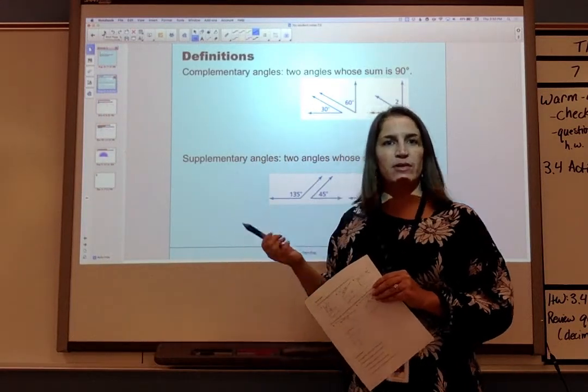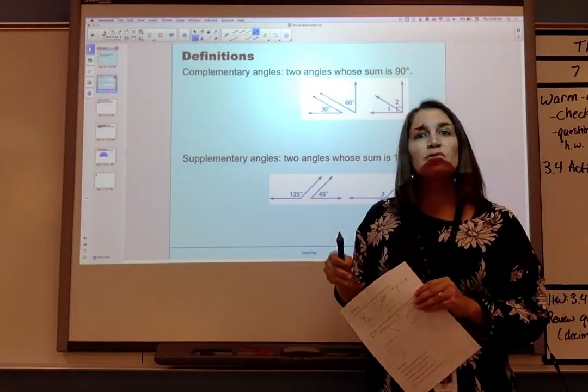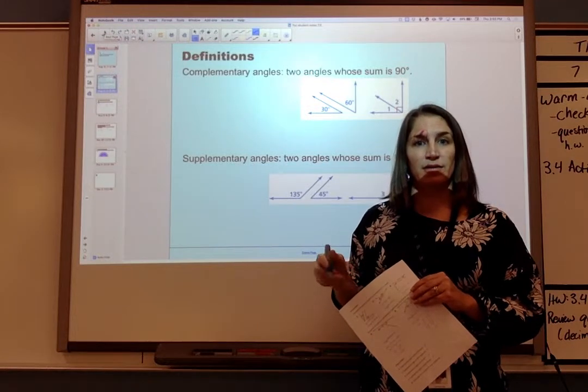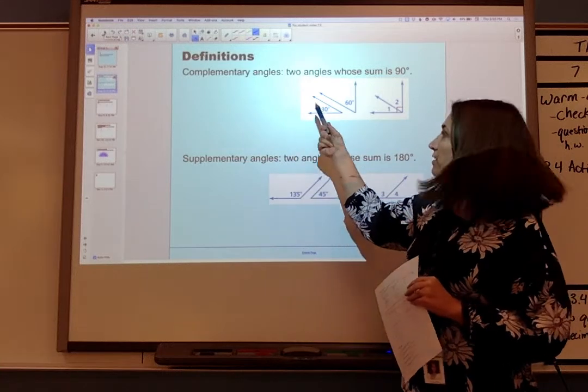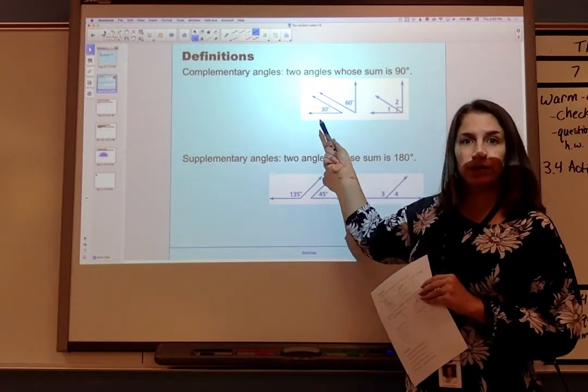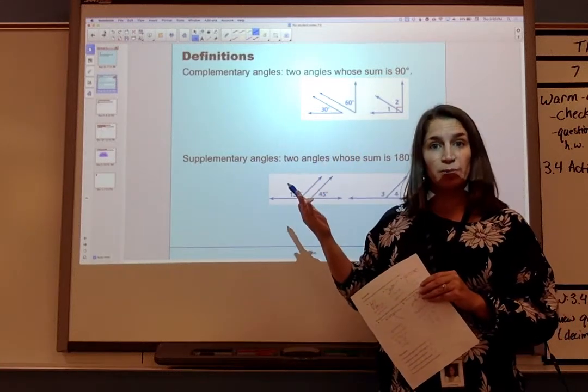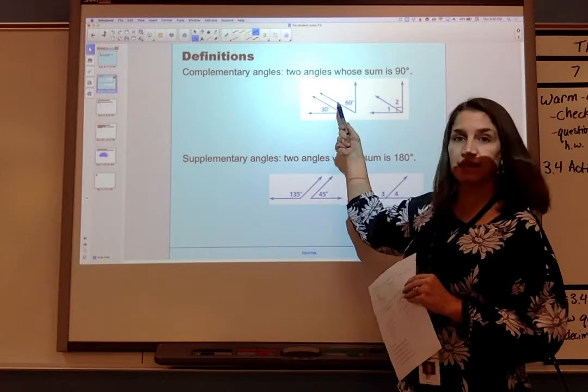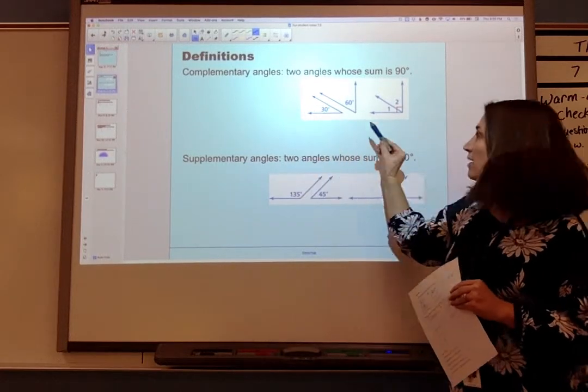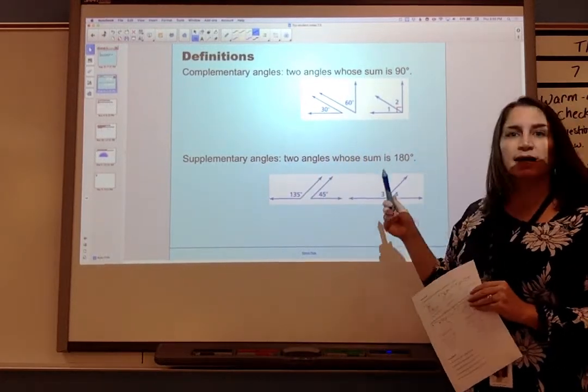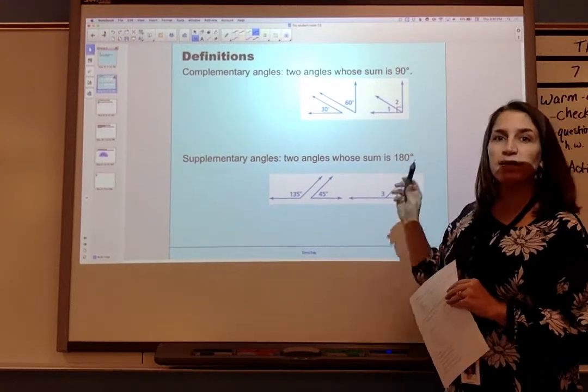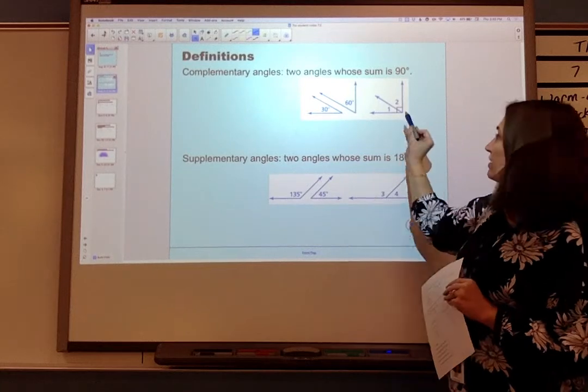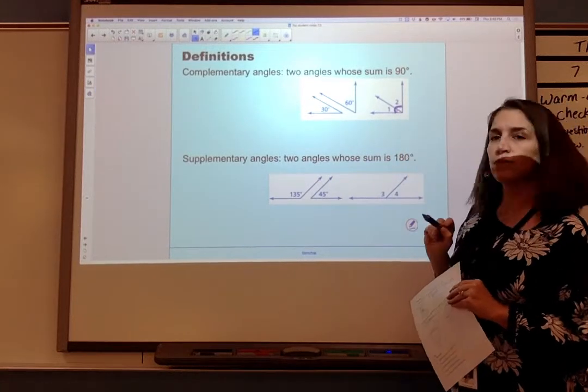Our first vocabulary word is complementary angles. Those are two angles whose sum is 90 degrees. I have two sets of complementary angles here. The first set I can tell is complementary because I can tell what their angle measures are, and 30 plus 60 equals 90. My second set of angles I can tell is complementary because they're adjacent angles and they form a 90 degree angle because I can tell I have a right angle symbol right there.